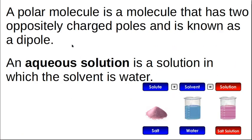So what is the definition of a polar molecule? A polar molecule is a molecule that has two oppositely charged poles and is also known as a dipole. Di meaning two, so two poles. So any solution in which the solvent is water is called an aqueous solution. So salt and water gives you a salt solution. It is an aqueous solution.